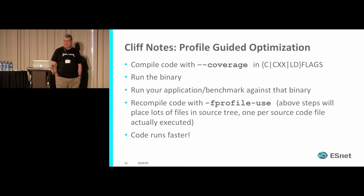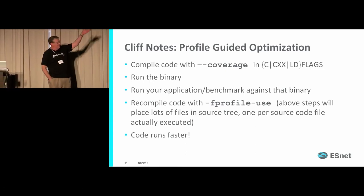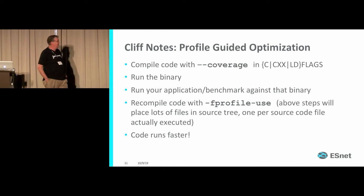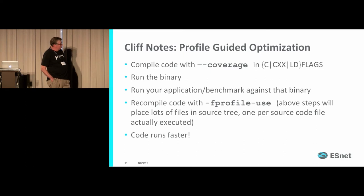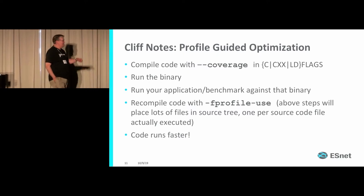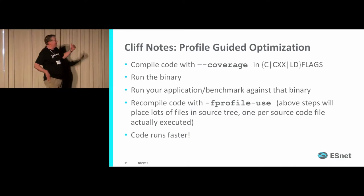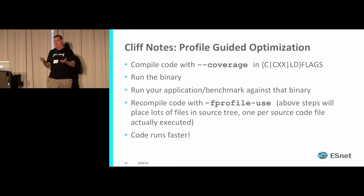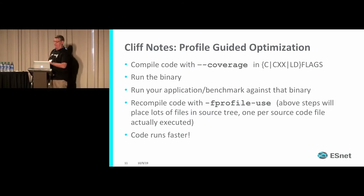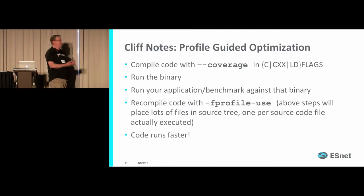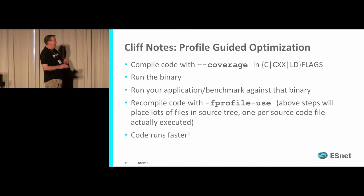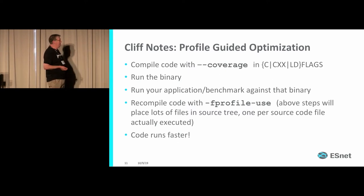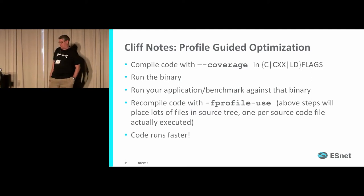Here's the Cliff Notes version: when you compile, you use a coverage flag. Run your application against that binary — in the case of Zeek, representative traffic, maybe network traffic, maybe PCAPs, whatever you think is representative. There are GCDA and GCNO files that get dropped into the build; some are pre-execution, others post-execution, and they're used for gathering statistics. Then use the profile-use flag when you recompile it, and it runs faster.